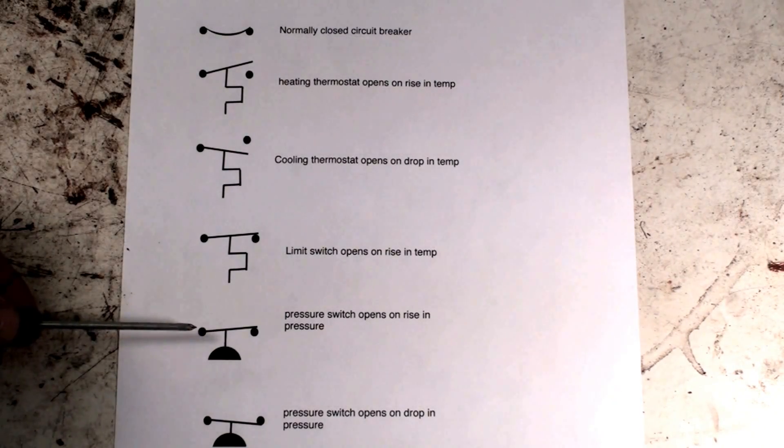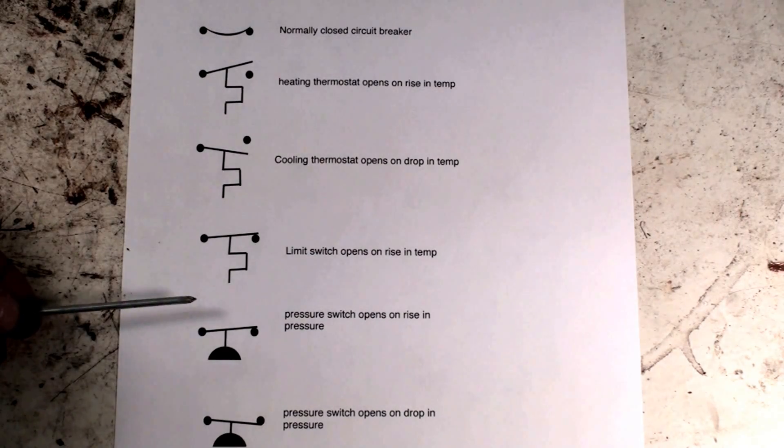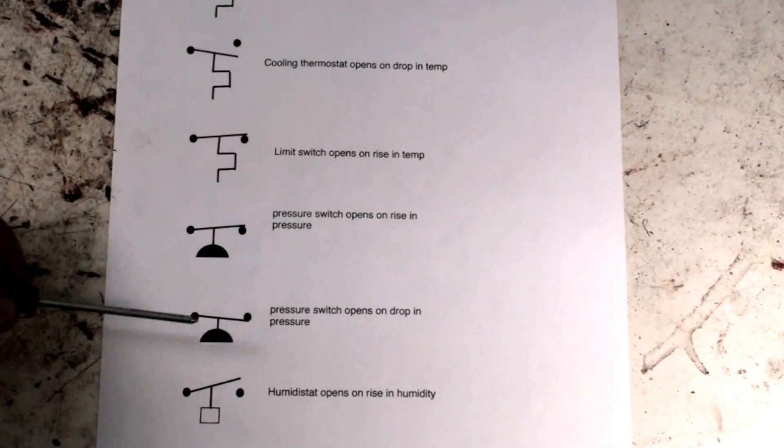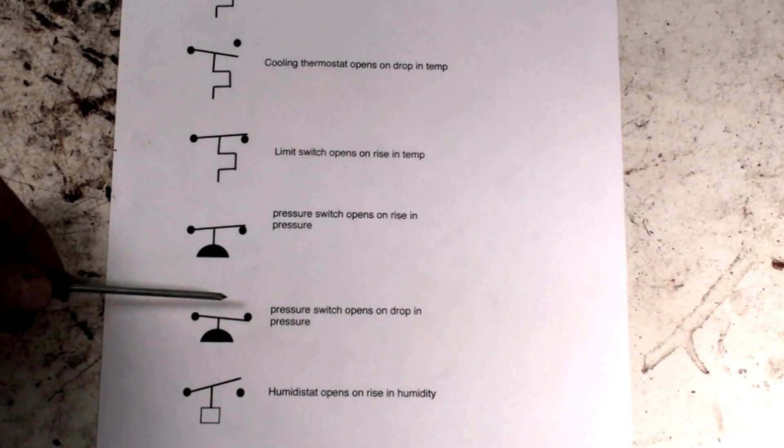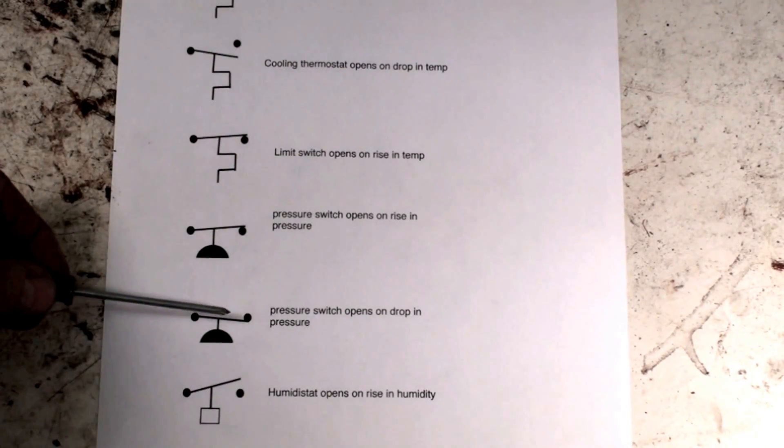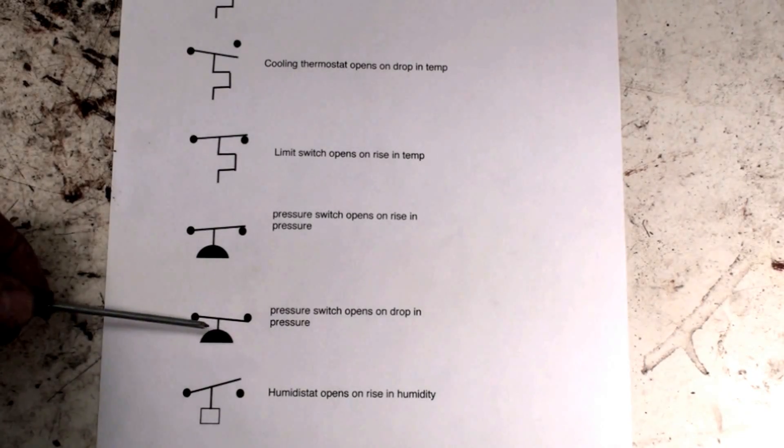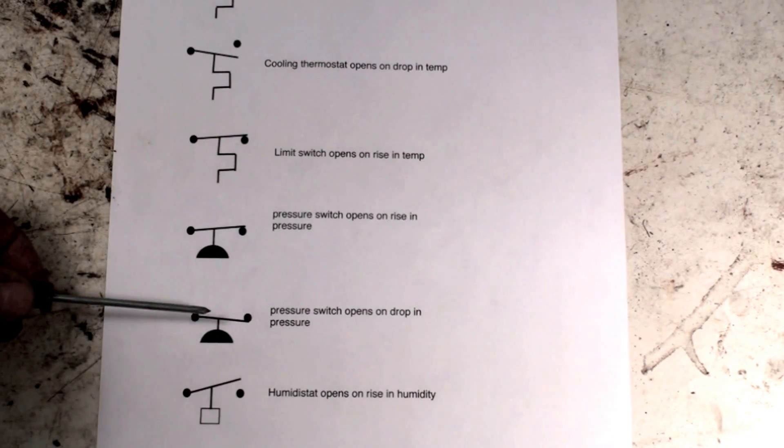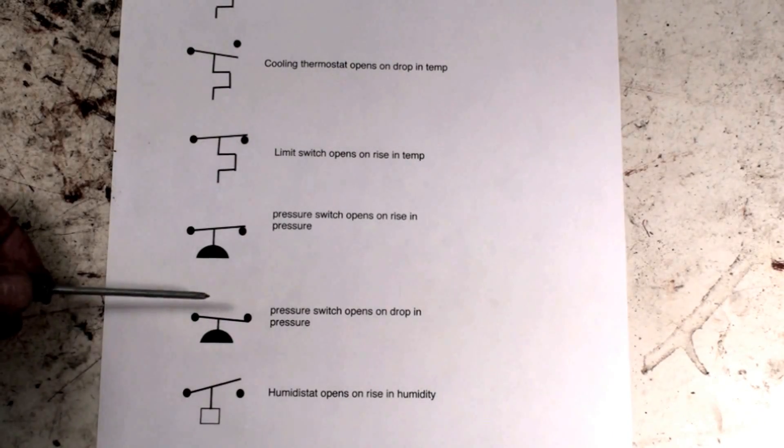This is a pressure switch that opens on a drop in pressure. Again, it's some sort of safety device because it is shown normally closed. If the pressure drops too low, it opens a circuit. Now if this was an operating control, it would be shown open, but these are safeties.